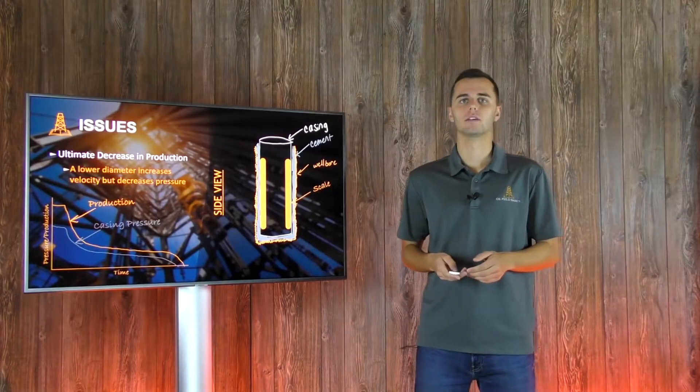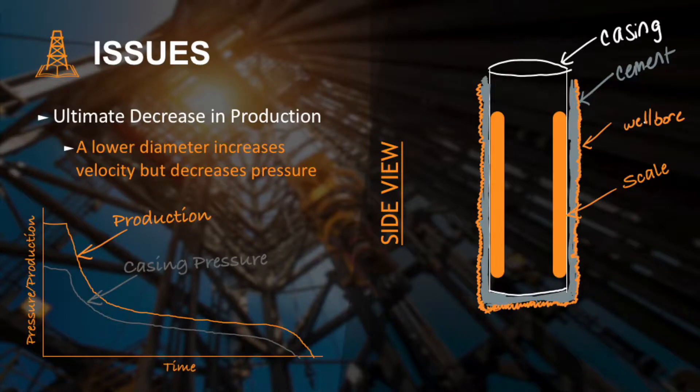The main issues that arise from scaling is the decrease of your well's production. If scaling occurs in the production casing of your well, which is your lateral, then it will be noted by your production falling off in proportion to your casing pressure.